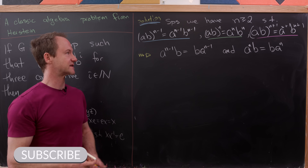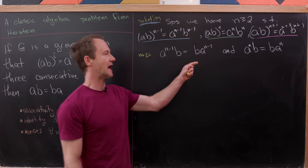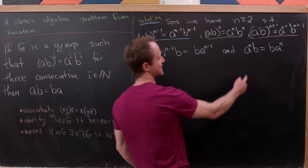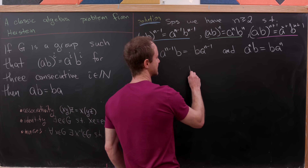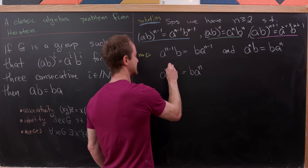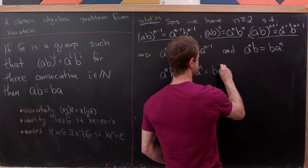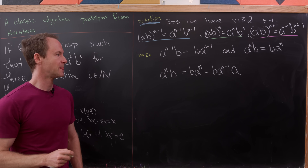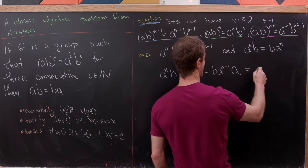Previously, we took our hypotheses and showed two key results: A^(n-1) B = B A^(n-1), and A^n B = B A^n. Now I'm going to start with the second one and see what we can do with it.